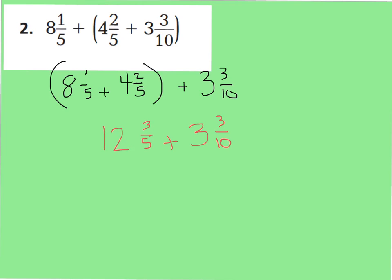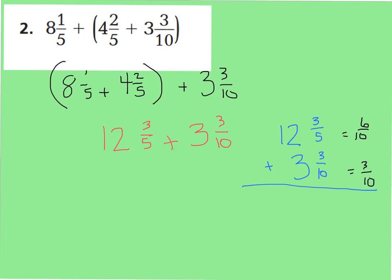Now we can add with different denominators, just like in our previous lessons. Rewriting 12 and 3 fifths plus 3 and 3 tenths, I can see I have different denominators, so let's make them the same — I'll make them both tenths. 3 tenths stays the same; 3 fifths equals 6 tenths. Adding 6 tenths plus 3 tenths is 9 tenths, and 12 wholes plus 3 wholes is 15 wholes. So the final sum is 15 and 9 tenths.